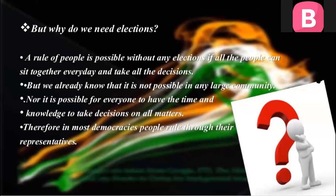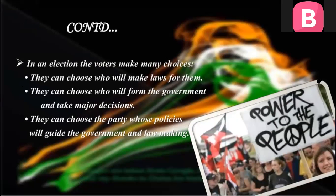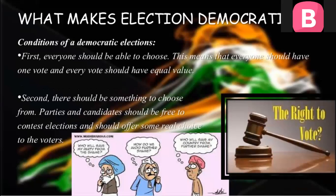Now, what makes elections democratic? When we are talking about democratic elections, as we discussed in the first chapter, elections should be free and fair — that is called democratic elections. Just now we discussed about China. When we are talking about democratic elections, that means minimum conditions of democratic elections. First, everyone should be able to choose — this means everyone should have one vote and every vote should have equal value. Second, there should be something to choose from, that means freedom to choose: parties and candidates should be free to contest elections and should offer some real choice to the voters, meaning a minimum of two political parties are required for elections.